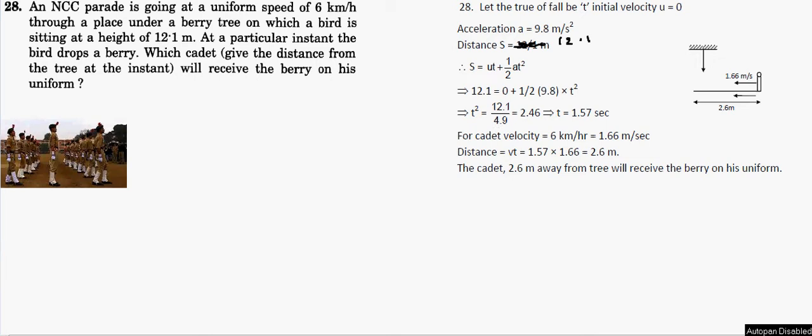Hello friend, let's see question number 28. An NCC Parade is going at a uniform speed of 8 kilometers per hour through a place under a berry tree. So what happened basically, let's see. There will be a berry tree here, and some berries are there. This is the tree, we have the tree and small berries are there. So what happened in this case, a bird is sitting at the height of 12.1 meters.